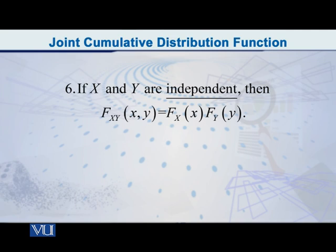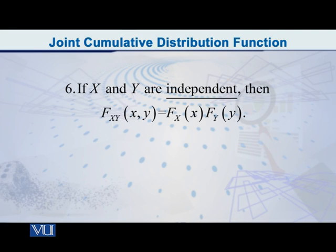Last but not the least, I would like to focus on property number six, and this one reads as follows: if capital X and capital Y are independent random variables, then the joint CDF is equal to the product of the marginal CDFs. That is, capital F of the random vector XY at the point small x, small y will be equal to capital F of the random variable X at the point x, multiplied by capital F of the random variable Y at the point small y.